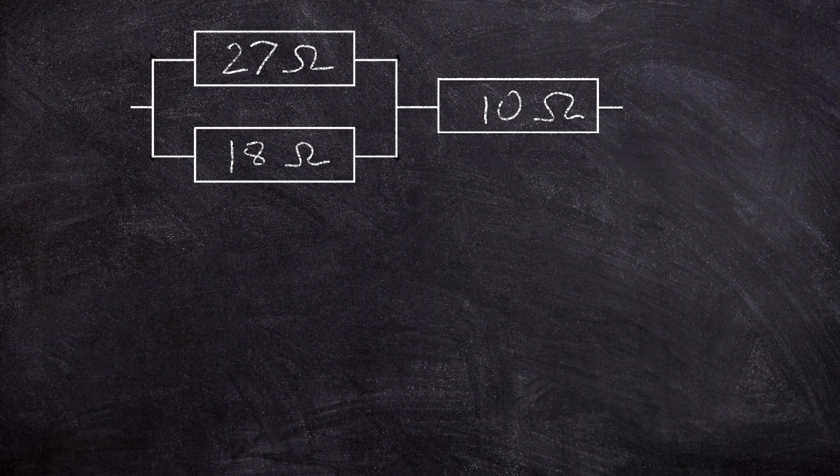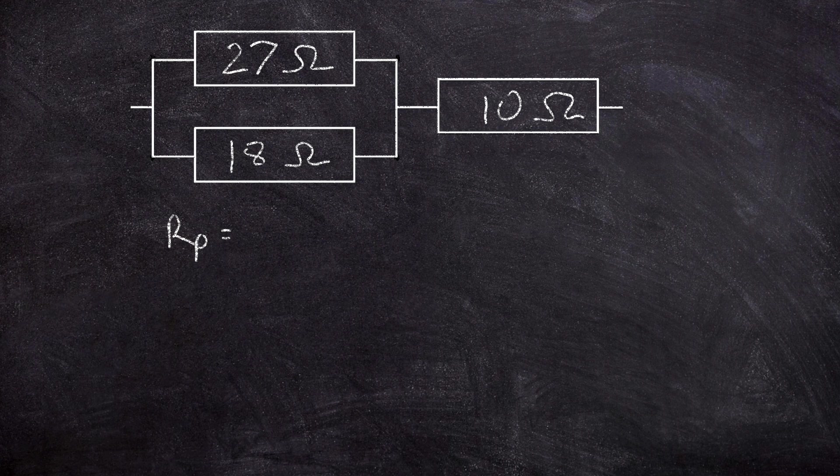So if we do some calculations here for the parallel part of the circuit, we'll call this sub-calculation RP, and in this case P means parallel. So we're looking for the resistance of the parallel part of the circuit. Notice the P is in the subscript there. Then we can look at this and say that resistor number one times by resistor number two divided by resistor number one add resistor number two.